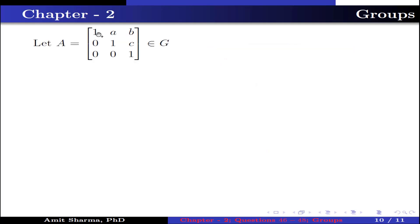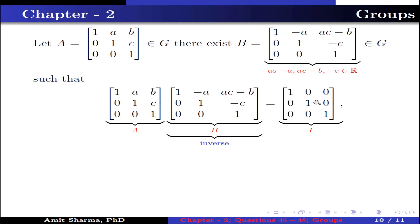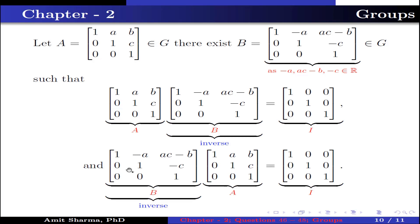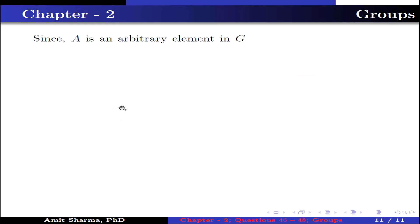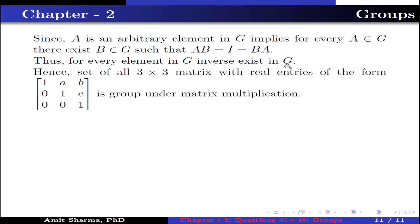Let A = [1, a, b; 0, 1, c; 0, 0, 1] belong to G. There exists a matrix B = [1, −a, ac−b; 0, 1, −c; 0, 0, 1] belonging to G, since it is of the given type with −a, ac−b, −c belonging to R, such that A·B = I = B·A. Here B is the inverse of A. Since A is arbitrary, for every A in G there exists B in G such that AB = I = BA. Thus every element in G has an inverse. Hence the set of all 3×3 matrices of the form [1,a,b; 0,1,c; 0,0,1] is a group under matrix multiplication.